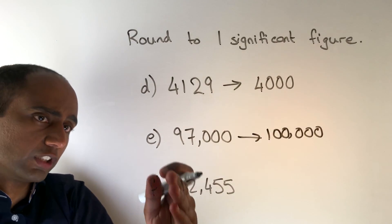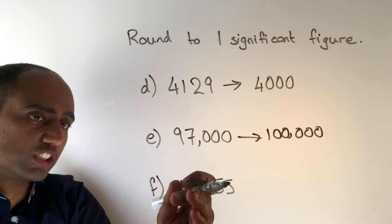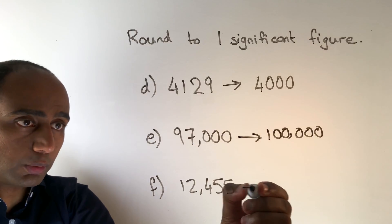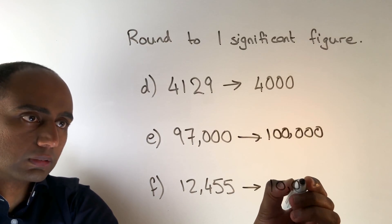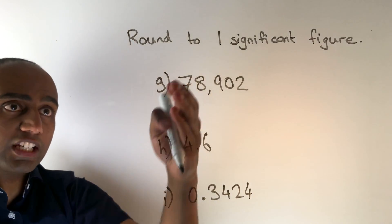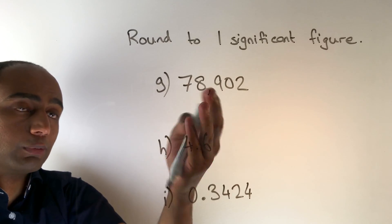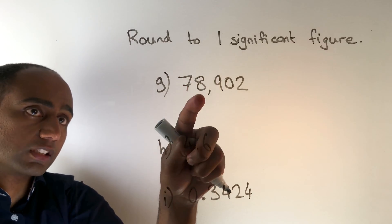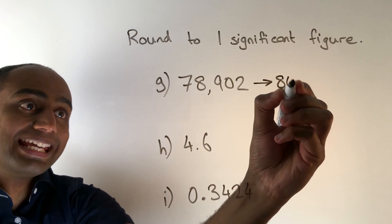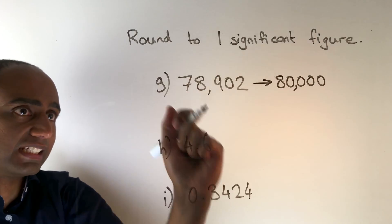In F we are rounding to the nearest ten thousand again. Because the next digit along is less than five we're going to round this down, so this would be ten thousand. In G we are also rounding to the nearest ten thousand — that's the biggest place value column. To decide whether we round up or down we look to the next digit; that's an eight so we round up. This number is closer to eighty thousand than to seventy thousand, so to one significant figure it is eighty thousand.